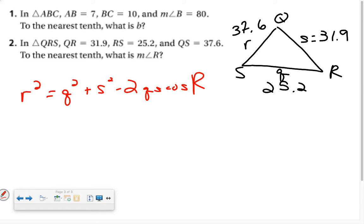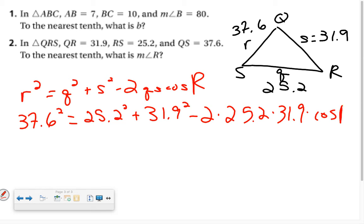Now, we'll plug the values in. R is 37.6 squared equals Q is 25.2 squared plus S, which is 31.9 squared, minus 2 times 25.2 times 31.9 times the cosine of R. And again, make sure that you're being careful about what's like terms and what's not.